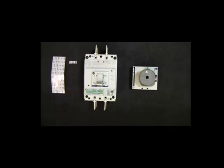For this demonstration, I'll be using the Bulletin 140G H-Frame, however the process is the same for a J-Frame breaker.